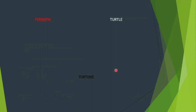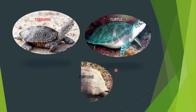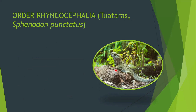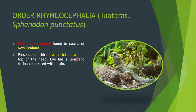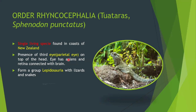Order Rhynchocephalia includes only a single species, Sphenodon punctatus — the tuatara — found on the coasts of New Zealand. It has a third eye called the parietal eye located on top of the head, which has a lens and retina connected to the brain. Tuataras form the group Lepidosauria with lizards and snakes. Rats were a major enemy of tuataras in New Zealand.